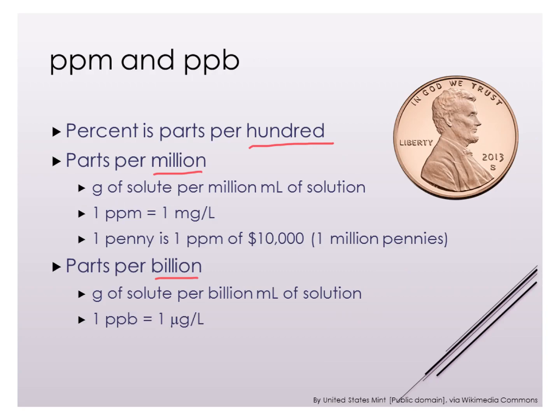If we're looking at something in parts per million, that means 1 gram of solute per million milliliters of solution. Another way to write this: anytime you see ppm, you can write it as 1 milligram per liter. Just as molarity means moles per liter when we see the big M, we can expand ppm the same way. So 1 ppm equals 1 milligram per liter.